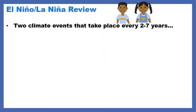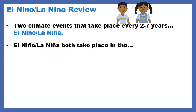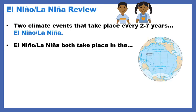Let's start off with our first review. What are two climate events that take place every two to seven years? The title and the two pictures should give you a hint. They are El Niño and La Niña. El Niño and La Niña both take place in the... Pacific Ocean.